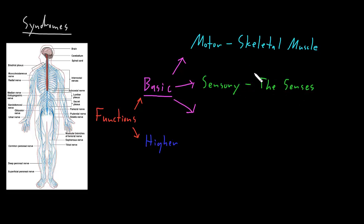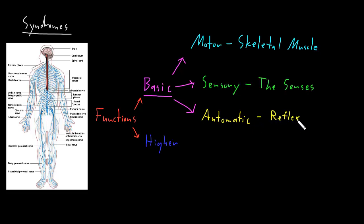We'll get into a lot more detail on those in later videos. The third big category of basic functions I call automatic functions — things that don't require conscious involvement. This includes reflexes, like when your doctor taps on your knee and your leg kicks out without you telling it to. There are also many other automatic functions the nervous system performs without requiring consciousness, including control of body systems involved in circulation, respiration, and digestion.